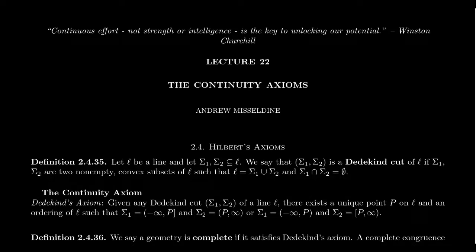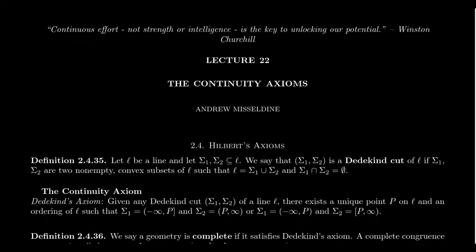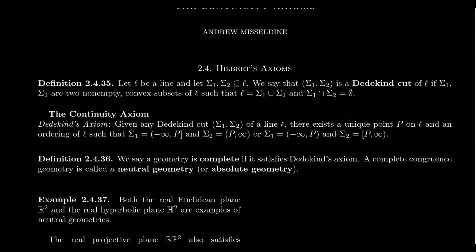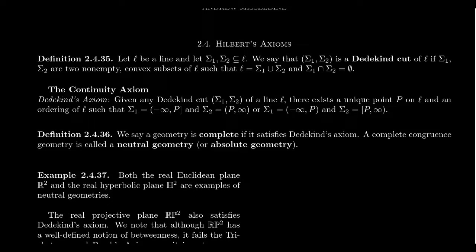We're going to recast our continuity axiom for geometry after the least upper bound property and use this idea of Dedekind cuts. As our goal is geometrically focused, I wanted to explain continuity in a way that will be most approachable for a geometry student. The conversation about Dedekind cuts will be the best way to approach continuity, as opposed to least upper bounds and completeness and other issues. We could talk about every Cauchy sequence being convergent — that's a type of completeness axiom — but that doesn't feel geometric. Dedekind cuts do.